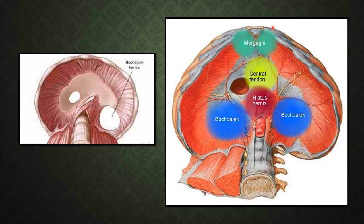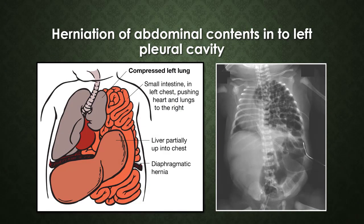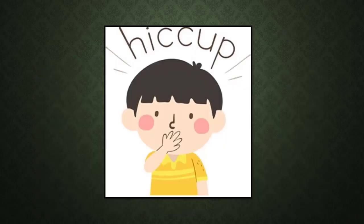Regarding hiatus hernia: in the normal state the stomach is below the diaphragm. In the sliding variety of hiatus hernia, the stomach slides inside the esophageal opening into the thorax. There is also paraesophageal hiatus hernia. Congenital diaphragmatic hernia causes herniation of abdominal contents into the left pleural cavity - intestinal loops and gas can be seen in the thoracic cavity on imaging. A simple but important clinical application of the diaphragm is hiccup - a forceful spasmodic contraction of the diaphragm leading to quick inhalation of air.